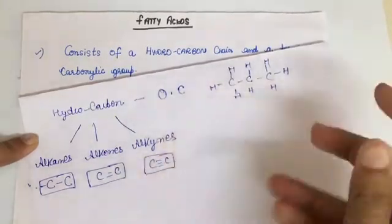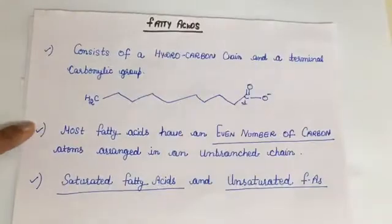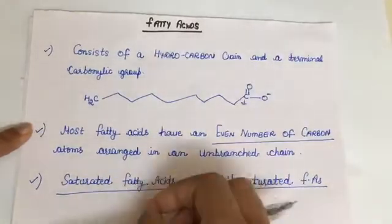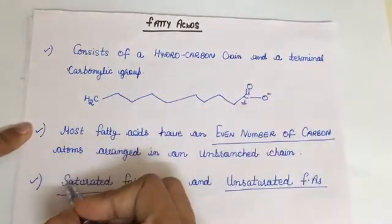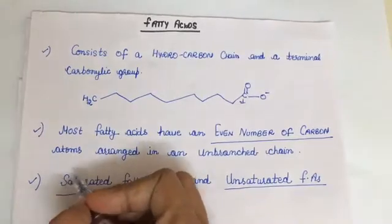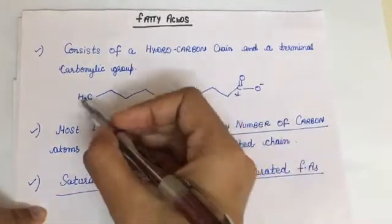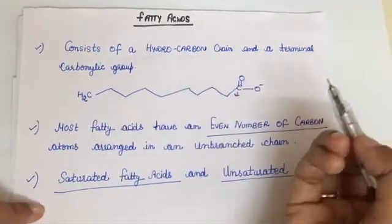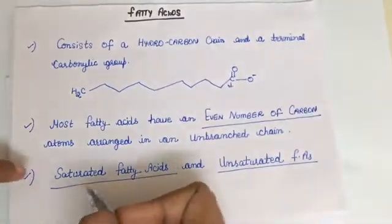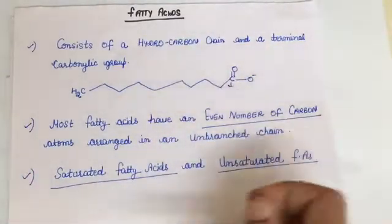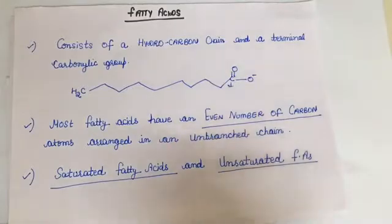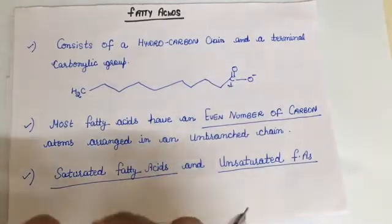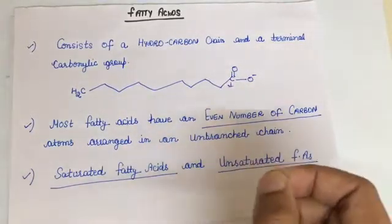Most of the fatty acids found in nature have an even number of carbon atoms arranged in an unbranched chain, as you can see here. There are two types of fatty acids: saturated fatty acids and unsaturated fatty acids. In nature, the saturation and unsaturation has its own importance.